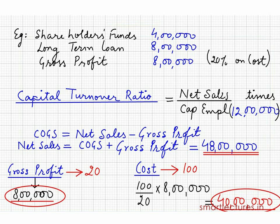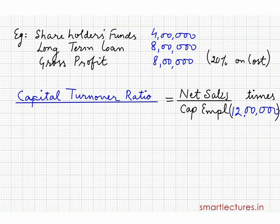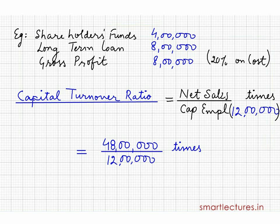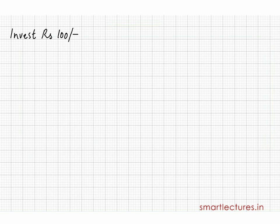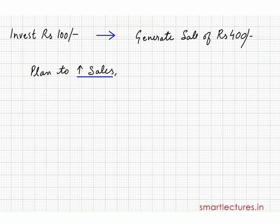So 48 lakhs is the sales of this company. Capital turnover ratio = net sales upon capital employed = 48 lakhs upon 12 lakhs = 4 times. This means in this company, if they invest 100 rupees they can generate sales of 400 rupees. If the company plans to increase sales and there is a direct connection between capital employed and sales, they can increase their capital employed and increase their sales subsequently.